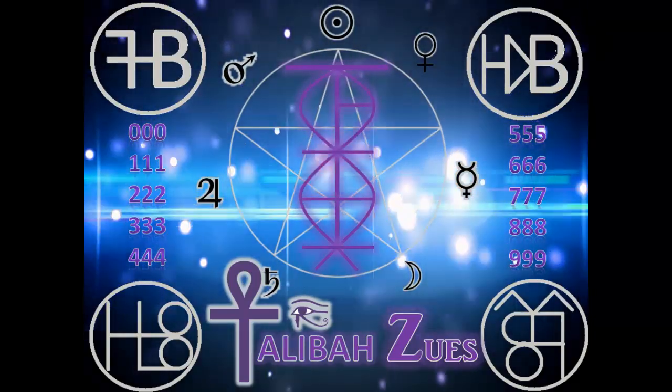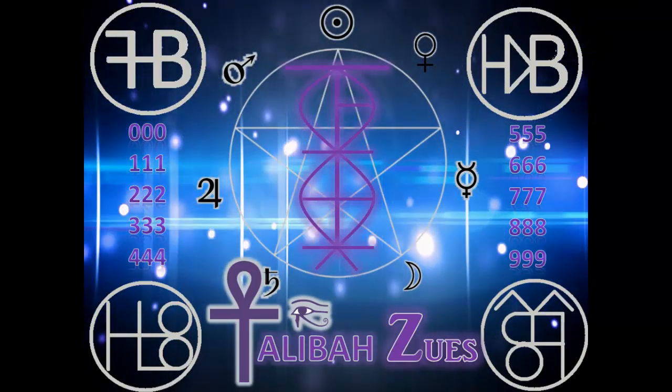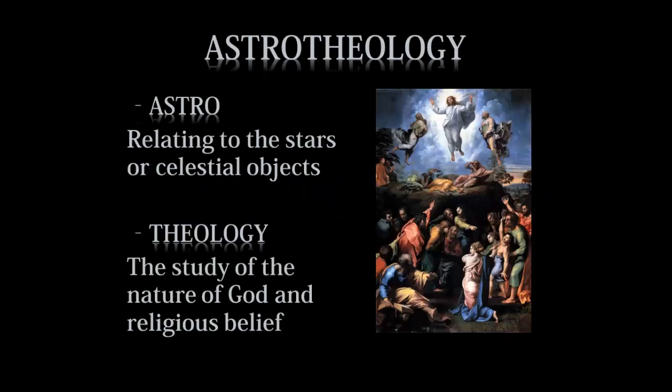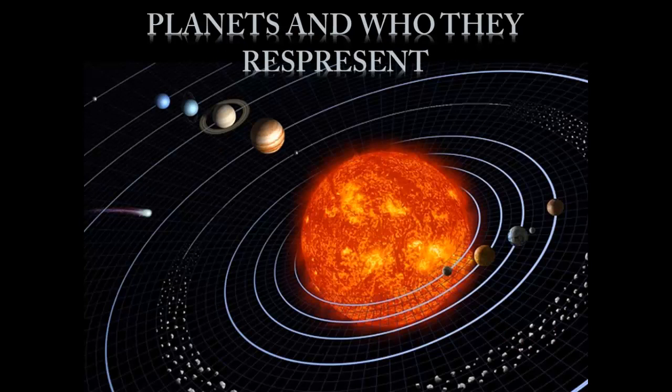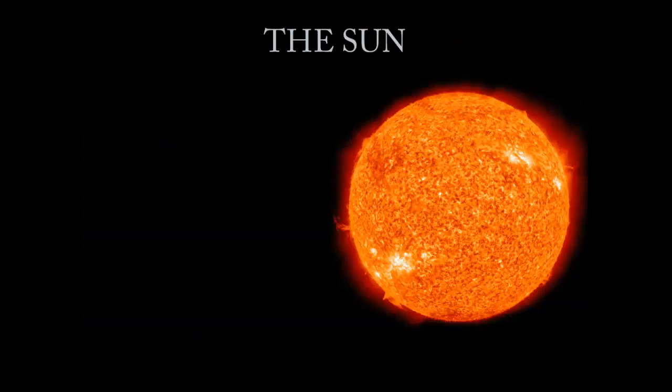Welcome back. This is Talib Azuse and the topic for today is astro theology — 'astro' relating to the stars or celestial objects, and 'theology' the study of the nature of God and religious beliefs. There are many things to look at within astro theology. We can look at the seven major planets, but there are also the star signs of the zodiac, which represent the 12 disciples of Jesus and so forth — but that's for another video. This one is just to introduce those who haven't looked at this before.